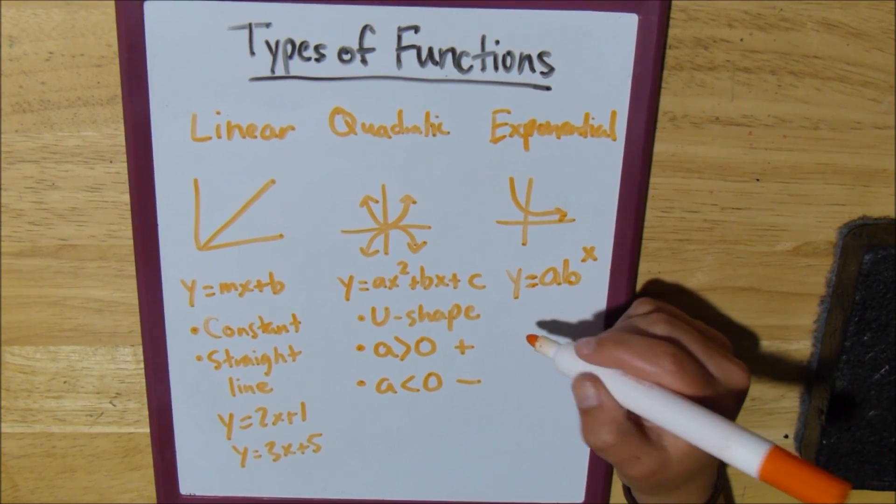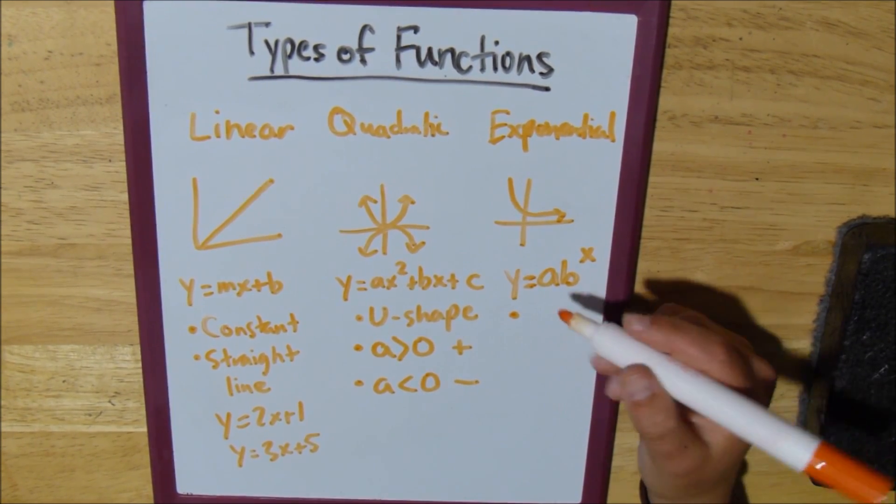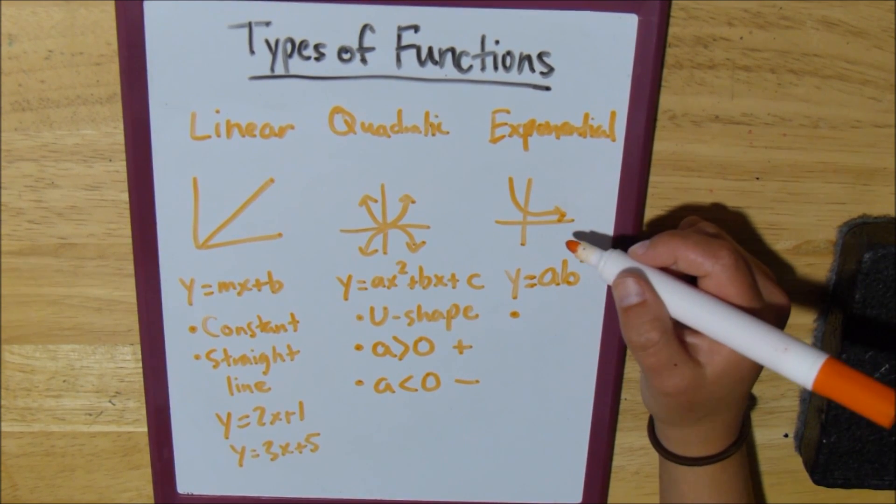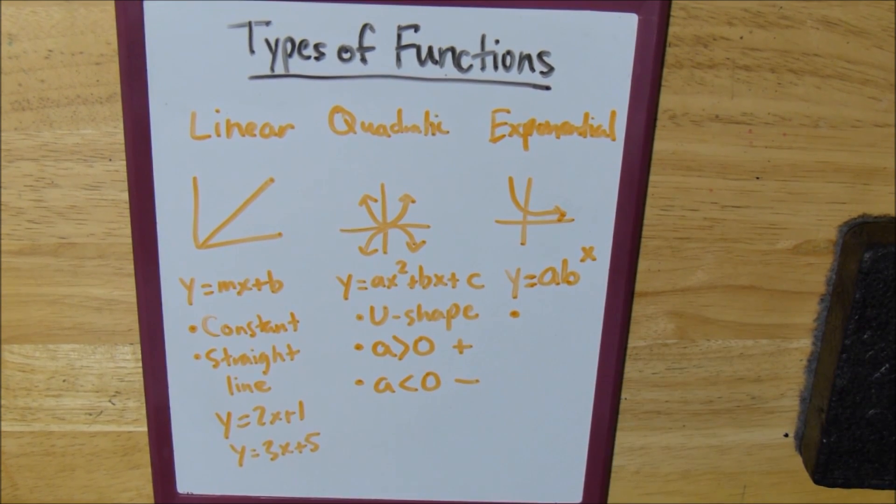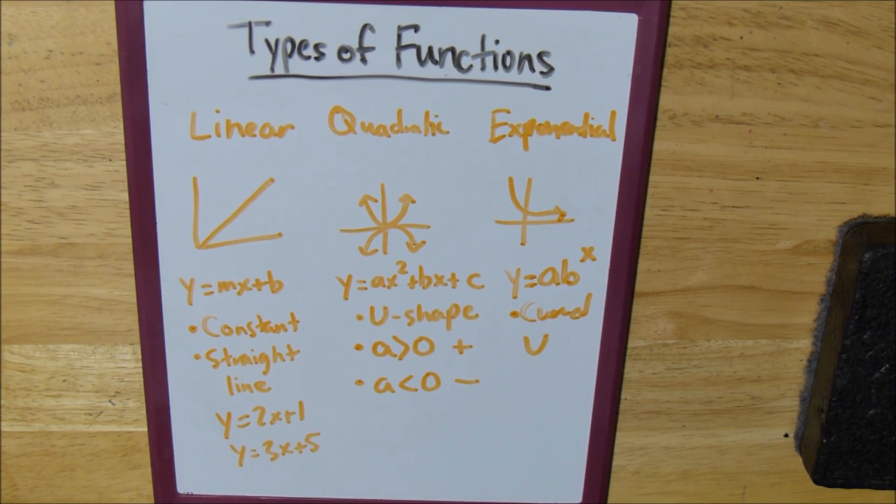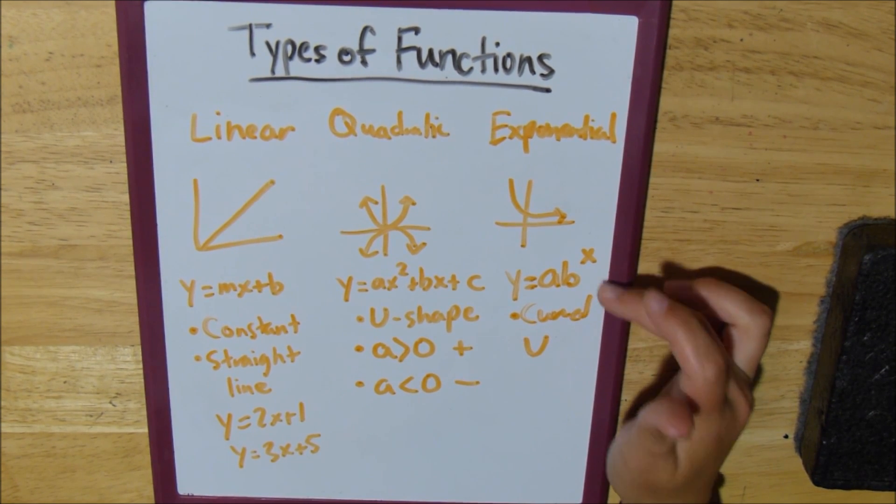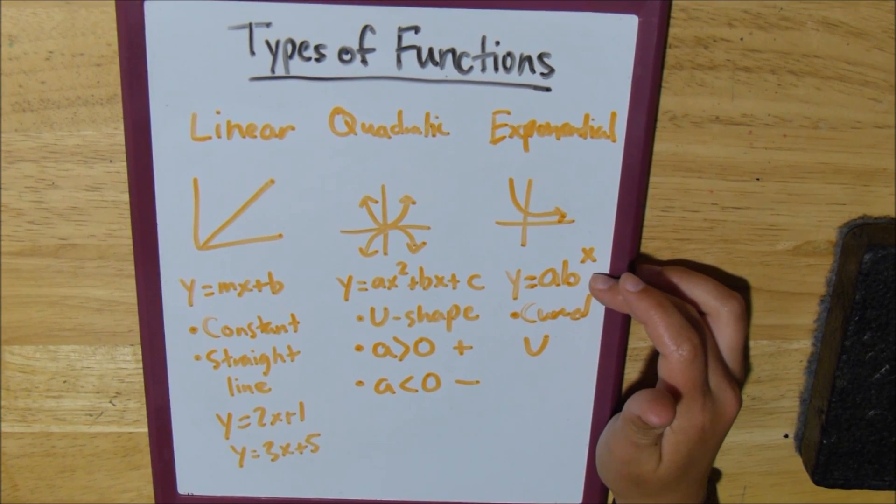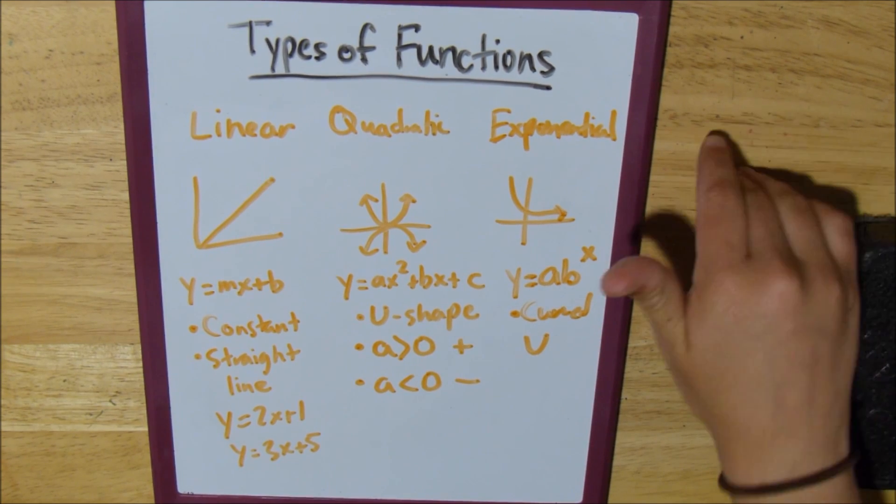And the defining characteristics are that it's sort of like a u, but it's not quite a complete u. It's like a curved u. And that's really all the defining characteristics. You typically have to look at the equation to figure out if it's exponential or a power.